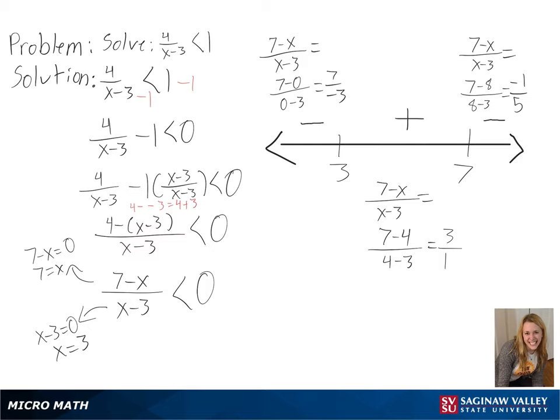For our solution, we need to find what is less than, but not equal to 0, so we will not include 3 and 7. And we will be using our negative regions, so we will get negative infinity to 3, and 7 to infinity as our final answer.